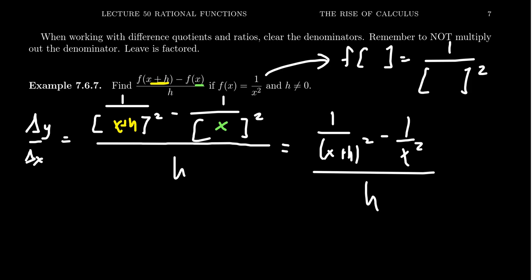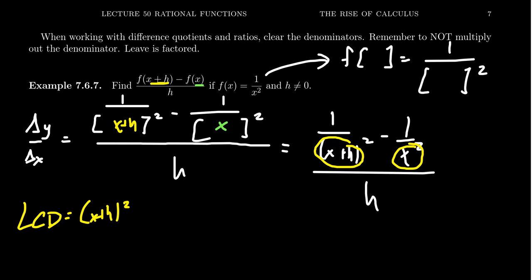In this situation, we have nested fractions — sometimes called compounded or complex fractions, fractions inside of fractions. There's one big fraction bar — that's the mother bar — and then some little baby fractions. We want the babies to move out. So we identify the least common denominator of the babies, which is (x+h)² times x². We then multiply the top and bottom of the mother fraction by that LCD.